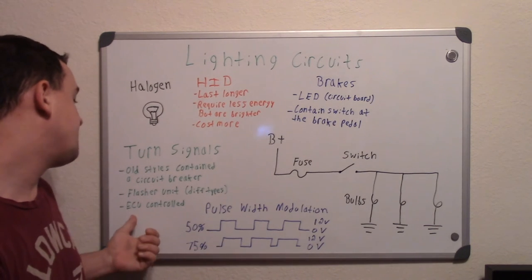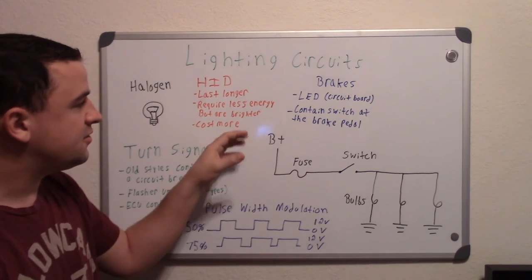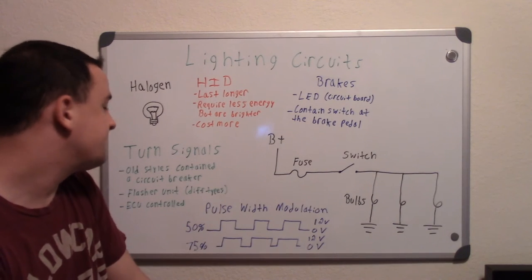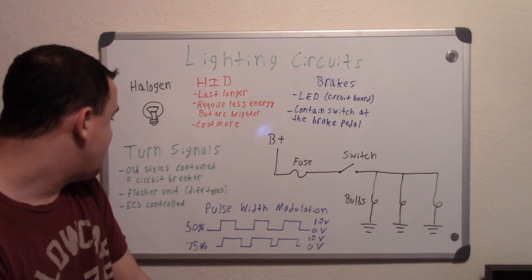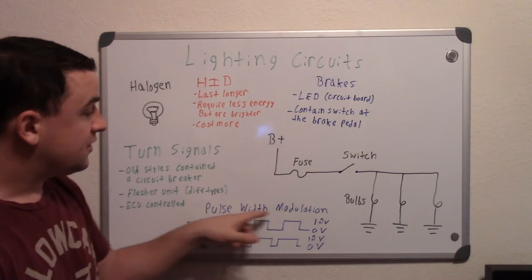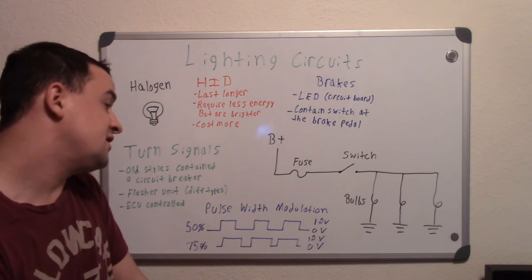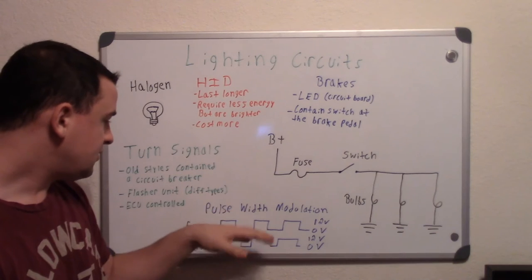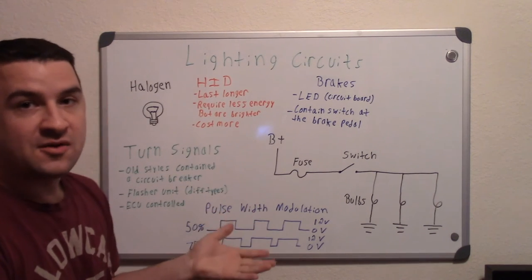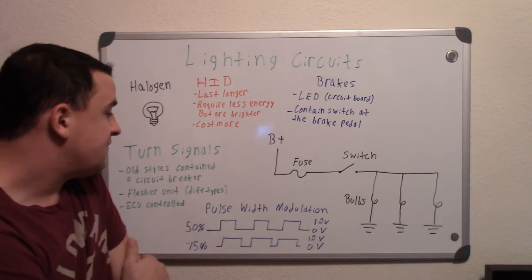But nowadays a lot of them are just ECU controlled. So you'll get a computer. Your computer will send the output to your brake systems or whatever lighting system you're using and that will control it itself. And that's when you get into these pulse width modulation which is computer control. What pulse width modulation is, it's essentially the on time of the bulb versus the off time. So the more on time you have, the brighter it's going to be. I have an example here, this is essentially 50% on versus off.